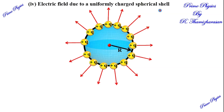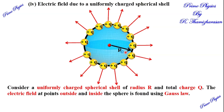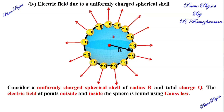Here we will take a spherical shell with radius R and total charge Q. We will discuss three cases: the electric field outside the charged shell, on the shell, and inside the shell.